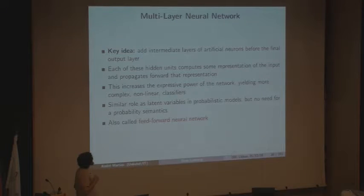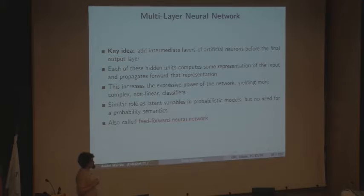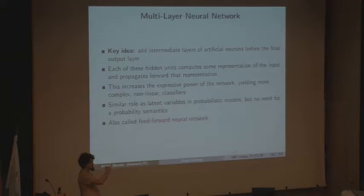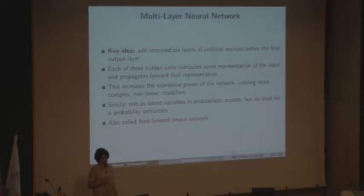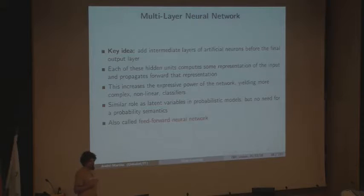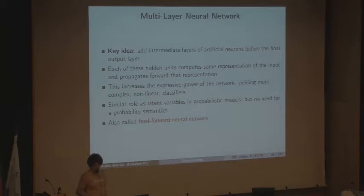The key idea is that we add intermediate layers of neurons before the final output layer. Each of these hidden units computes some kind of representation of the inputs — this is where representation learning comes into play — and propagates that representation forward in the network. By learning these intermediate representations, we increase the expressive power of the network, allowing us to build classifiers that are more complex and nonlinear. Another name for multilayer neural networks is feed-forward neural networks — meaning you just propagate the inputs forwards without any recurrences.